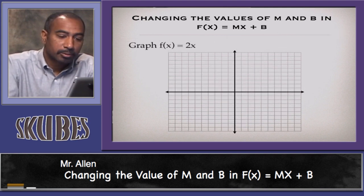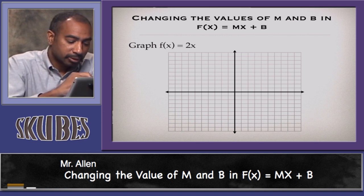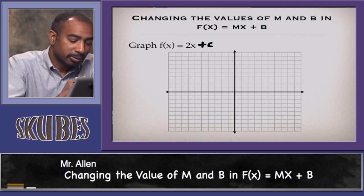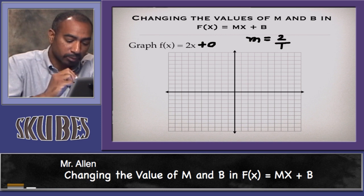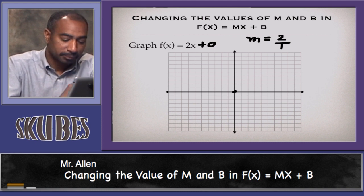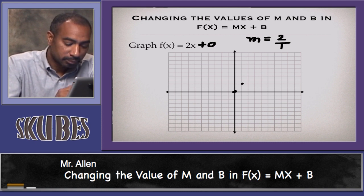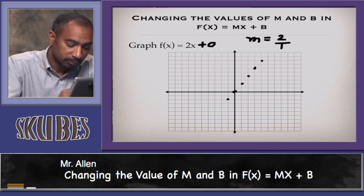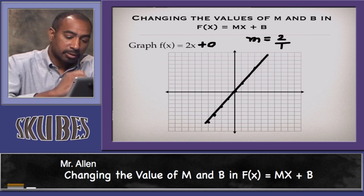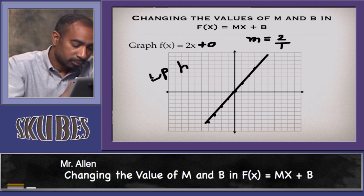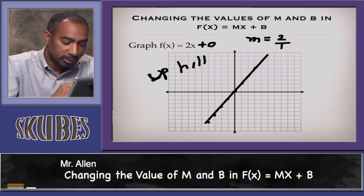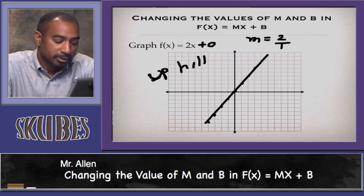Graph f(x) = 2x. This doesn't have a written y-intercept, but the y-intercept is 0, and our slope is 2, or 2 over 1. So you start at the origin. Go over 1, up 2; go over 1, up 2. Or go to the left and down 2. The line goes uphill and crosses through the origin. When there's no y-intercept term, the line crosses through the origin.